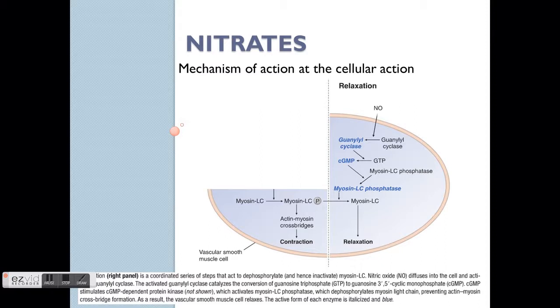First of all, let's look at the relaxation section, which is indicated by this NO. NO is the short form for nitric oxide. Nitric oxide is the key component from the nitrates family, whereby nitric oxide, or NO, is actually a gas. So it can freely diffuse through the lipid bilayer of the membrane of the cells to activate this guanylacyclase.